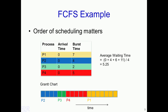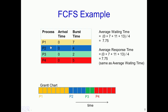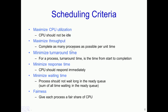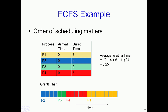One characteristic of the FCFS scheduling algorithm is that the order of scheduling matters. In the previous example with order P1, P2, P3, P4, we got an average waiting time of 7.75 cycles. If we change the ordering so that P2 executes first, then P3, then P4, and finally P1, the average waiting time reduces from 7.75 cycles to 5.25 cycles. Similarly, the average response time also becomes 5.25 cycles.